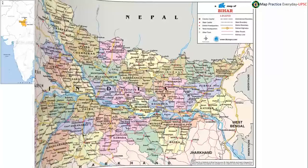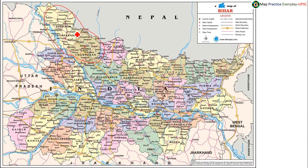We saw a sanitation program in Champaran district. Champaran has East Champaran and West Champaran — two districts. Champaran district has a boundary with Nepal and also a boundary with Uttar Pradesh.